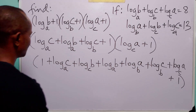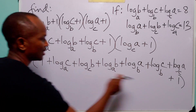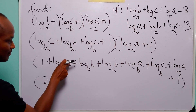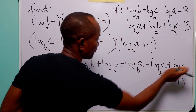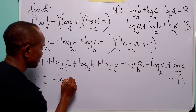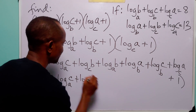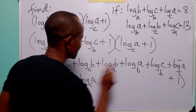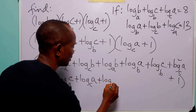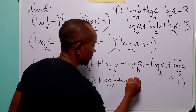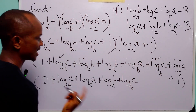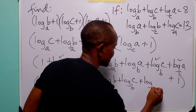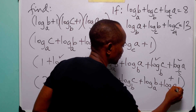Now let us collect the terms. We have 1 plus 1 which equals 2. Then we collect: log to base a of c plus log to base c of a; log to base c of b plus log to base b of c; and log to base a of b plus log to base b of a.